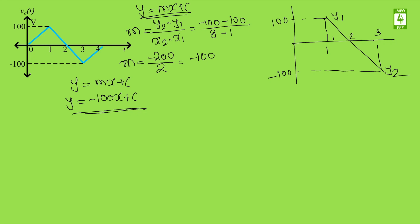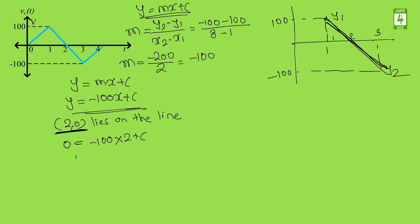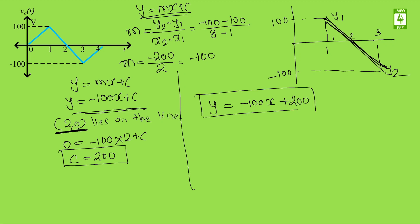In order to find the y-intercept we consider the point (2, 0) lying on the line — instead of this point you can take any point on the line. Putting in the values: 0 = -100(2) + c, so c = 200. The equation becomes y = -100x + 200, where y is the voltage axis and x is the time axis, valid between 1 to 3.